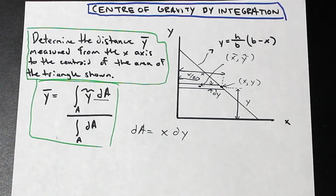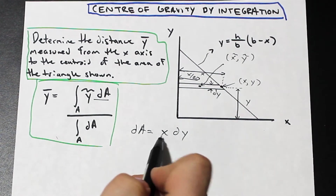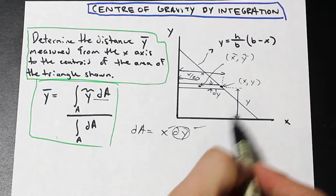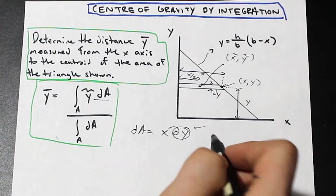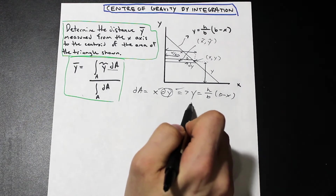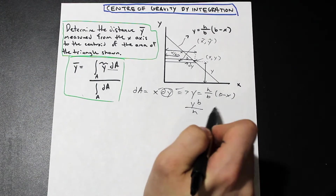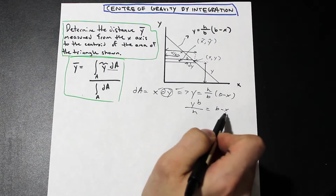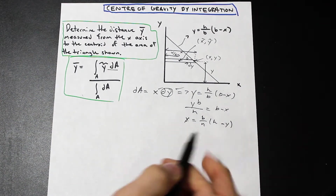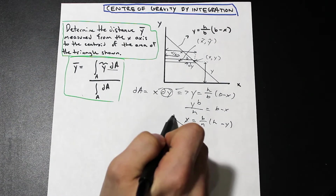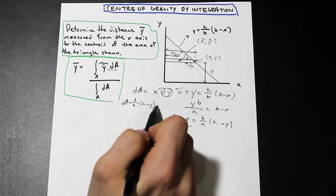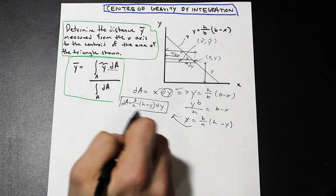What we're going to want to do is express our expression in terms of y, since we're finding y bar. The dY is already in terms of y — that's perfect. But x is not in terms of y, so we need to take our expression for the line and determine what x is in terms of y. We have y = (h/b)(b − x). Solving for x: multiply both sides by b/h and rearrange to get x = (b/h)(h − y). So our dA term is (b/h)(h − y) dY.